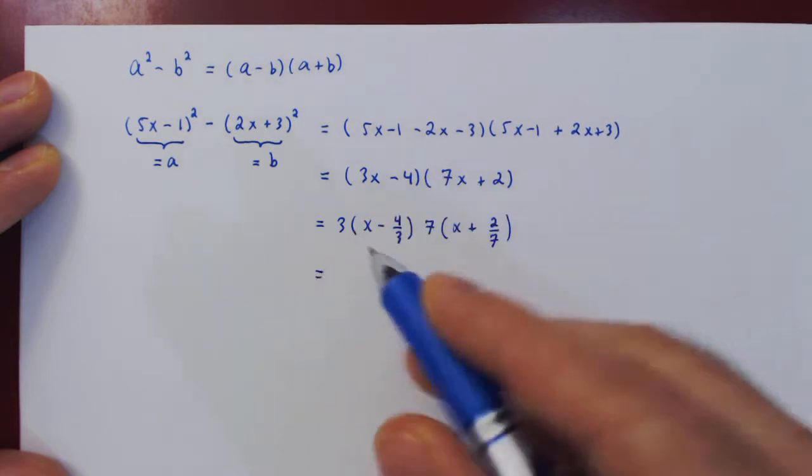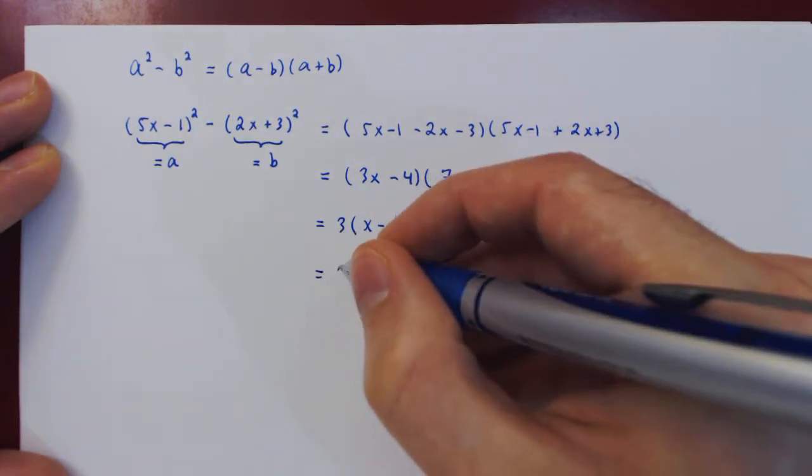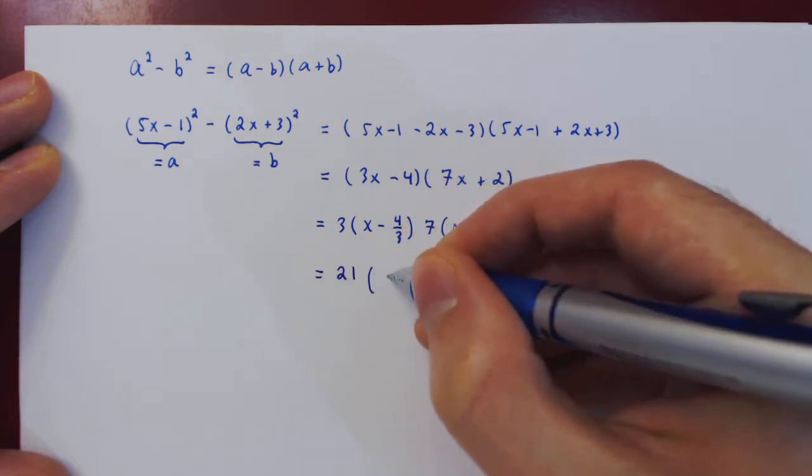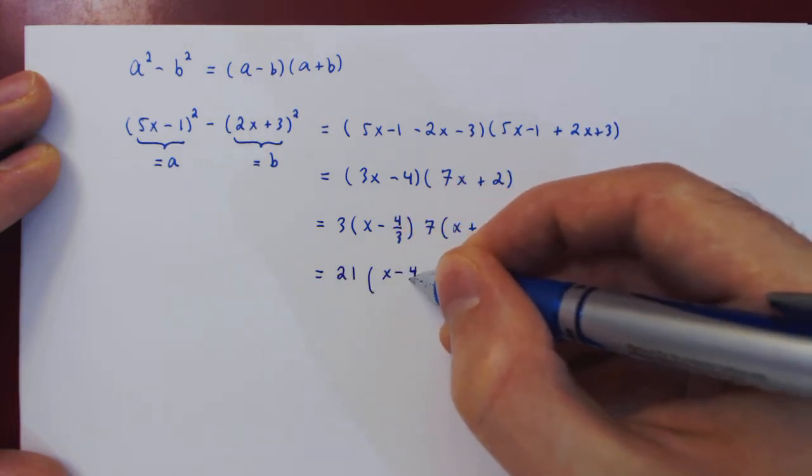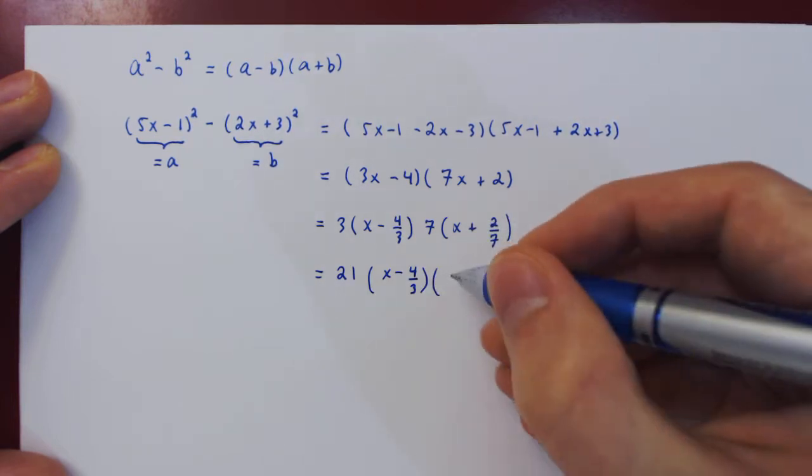And if we regroup now, the two constant multiples, so 3 times 7, 21. And so we have 21 times x minus 4 thirds, times x plus 2 over 7.